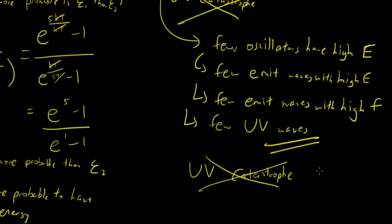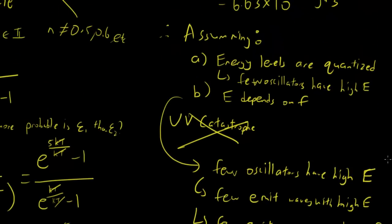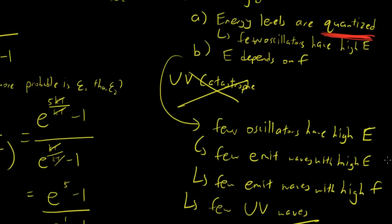This concludes the ultraviolet catastrophe — the ultraviolet catastrophe disappears. Max Planck solved it with quantum mechanics: he assumed that energy levels are quantized, and that was the heart of the matter. So that's basically how the ultraviolet catastrophe was solved, and in the process, quantum mechanics was born. Hopefully you guys enjoyed that. See you in the next episode.